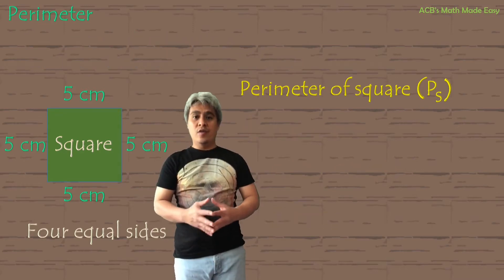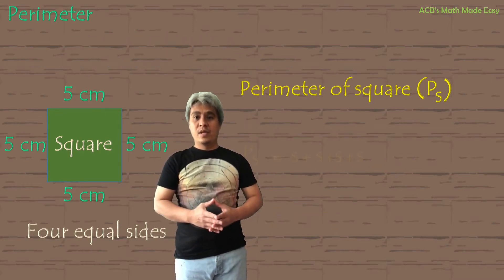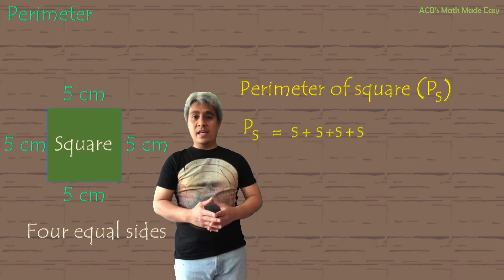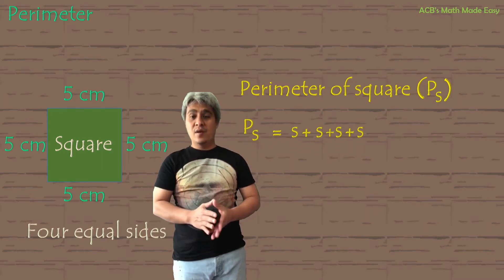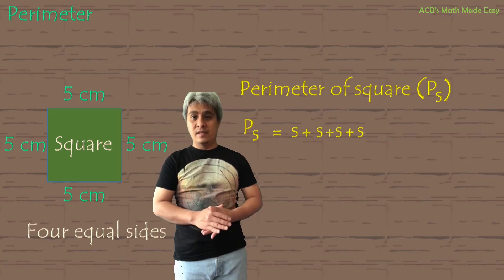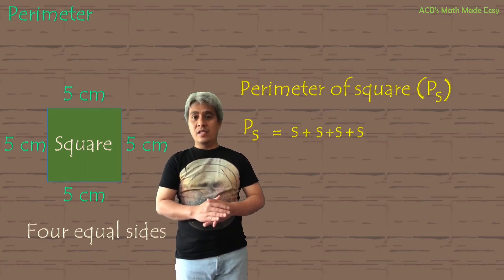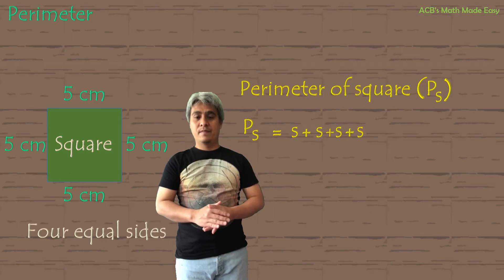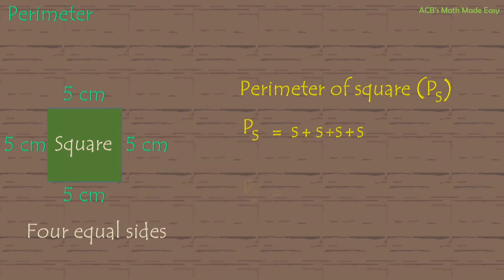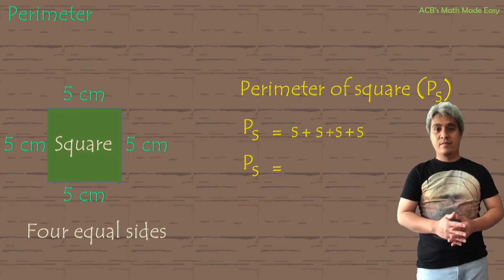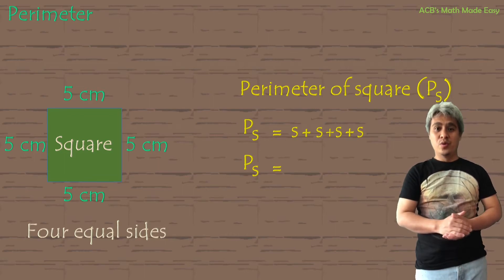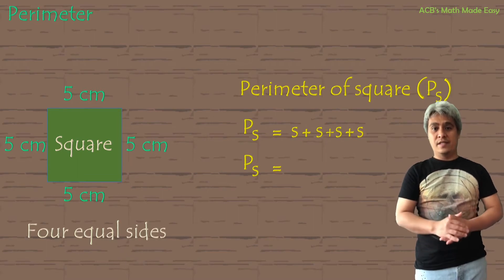In our formula of the square, PS equals S plus S plus S plus S. This formula can still be simplified. S plus S plus S plus S — how many S's do we have here? 1, 2, 3, 4. We have 4 S's.